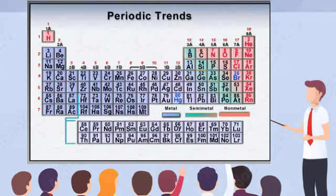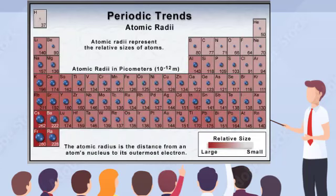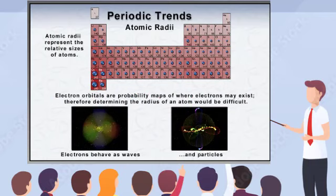The arrangement of elements in the periodic table shows much more than their increasing atomic number, electron configurations, physical state, and metallic character. The table on the screen shows the trend in atomic sizes, or radii. Electrons are described by cloud-like orbitals that tell us the probability of where we might find the electrons. Therefore, determining the radius, or the exact distance from the center of the atom to its outermost electron, is difficult. However, there are ways to determine atomic radii.